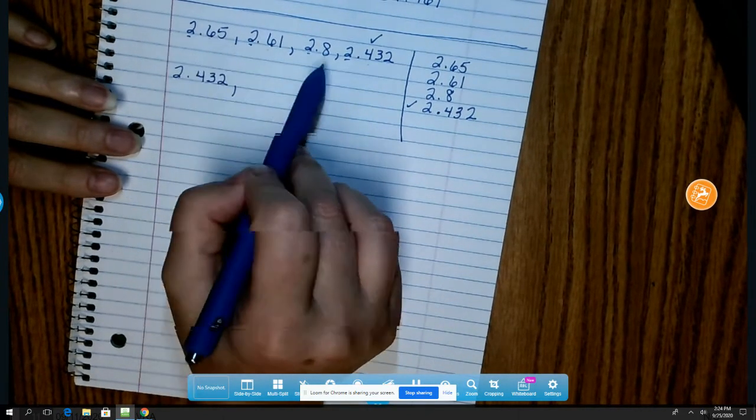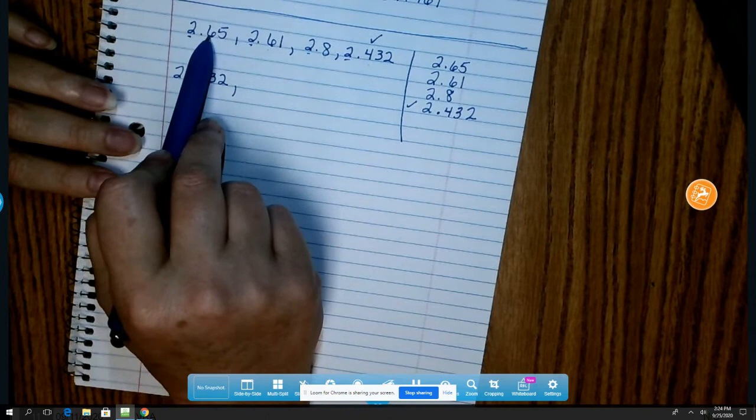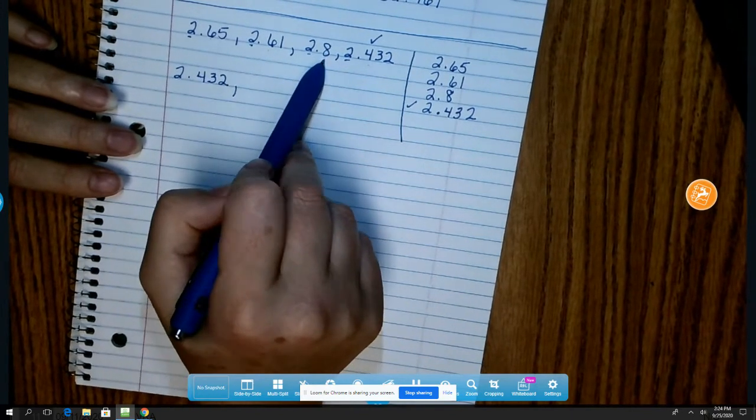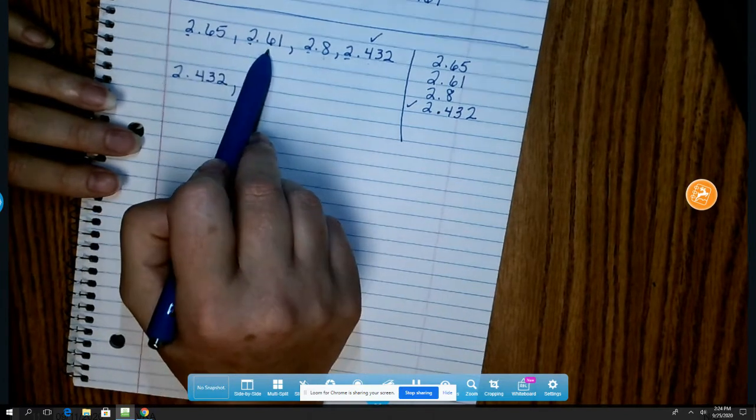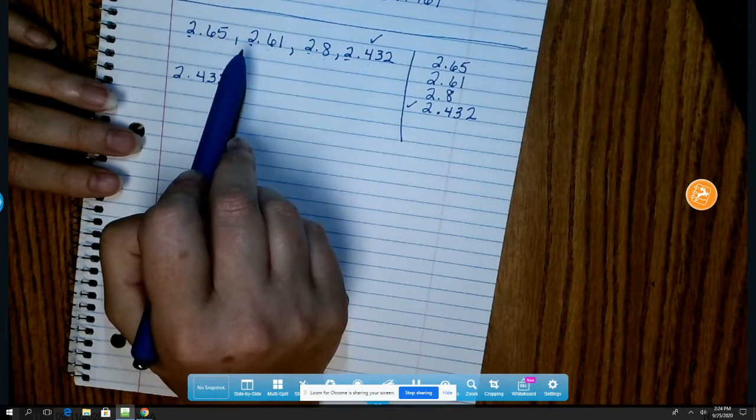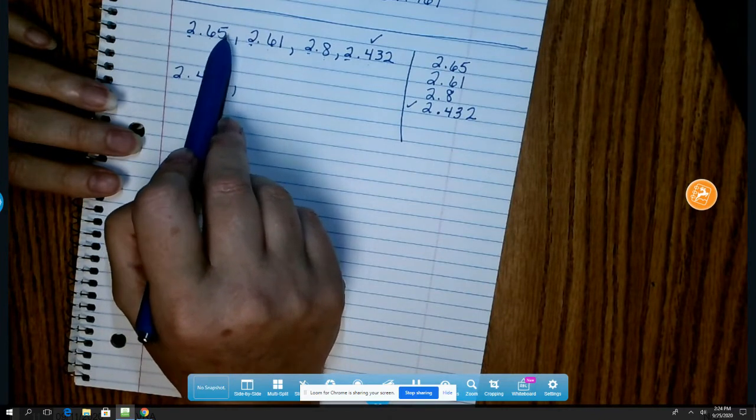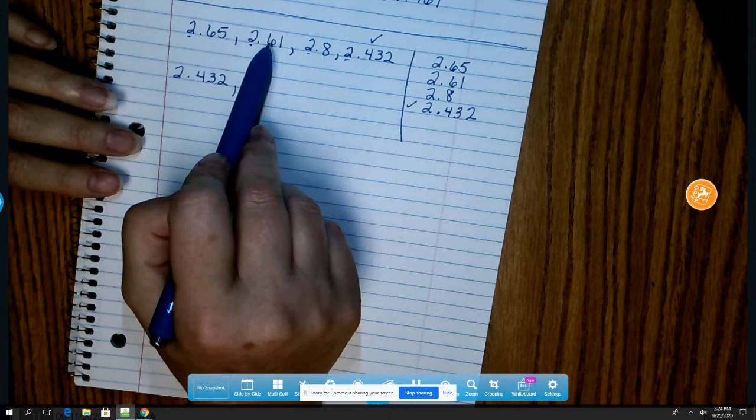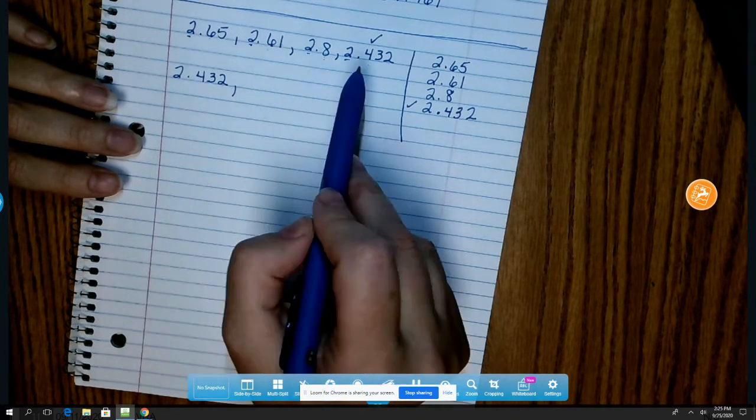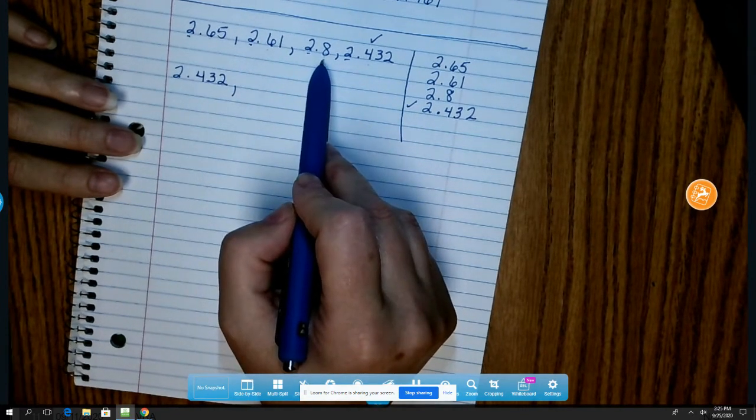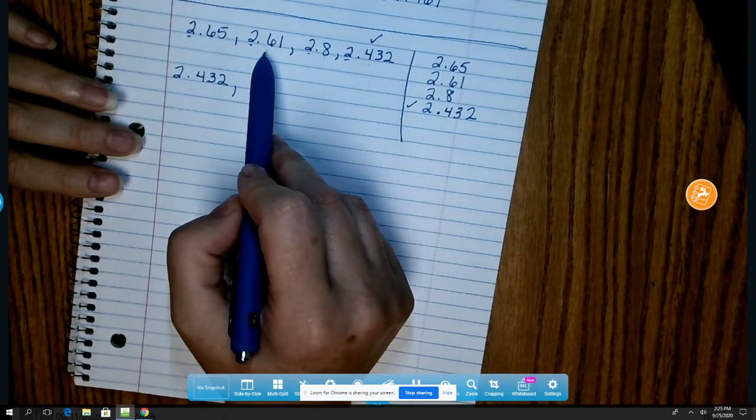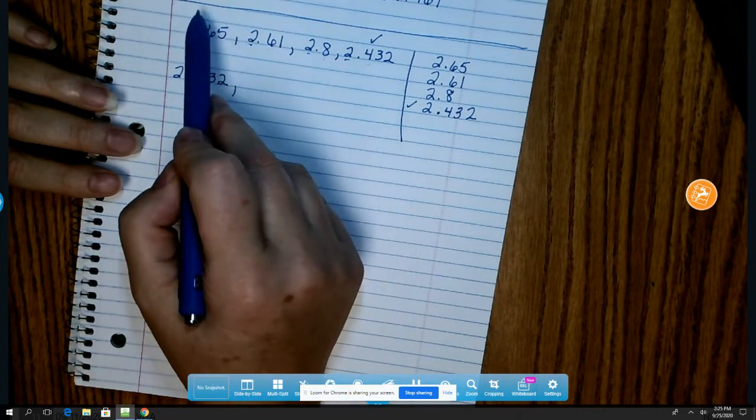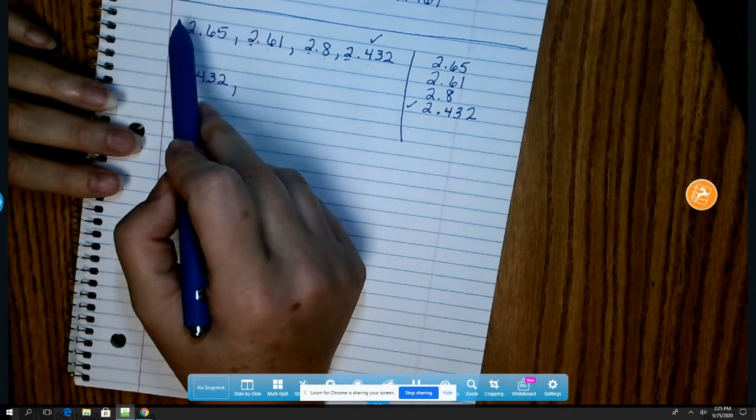So now if I look, I've already compared the 2s, and I have a 6, a 6, and an 8 in the tenths place. Well, I know that 6 is smaller than 8, but 2 of my numbers have a 6 in the tenths place. So I need to look at the hundredths number for these two numbers to determine which one is smaller. I know that 2 and 8 tenths will not be smaller because 8 is larger than 6. So now I've narrowed it down to these two numbers for which one would come next.